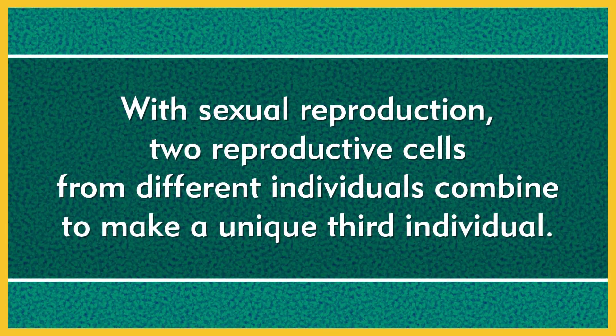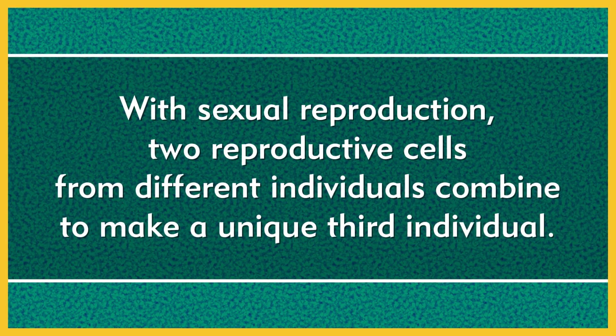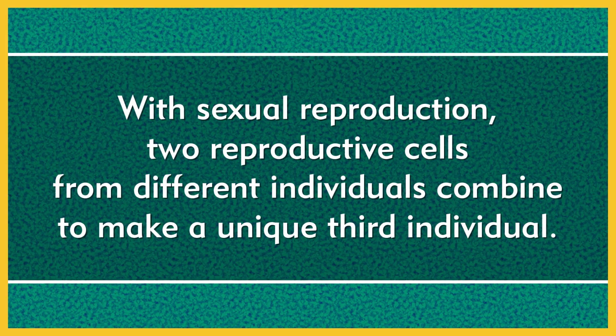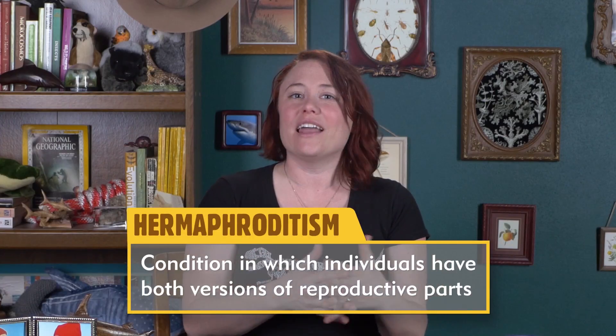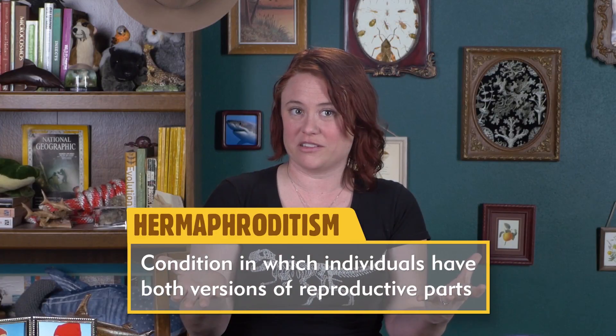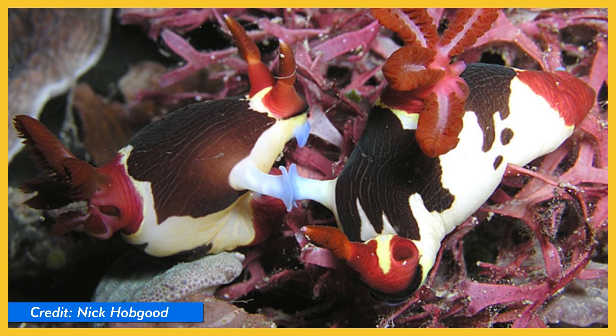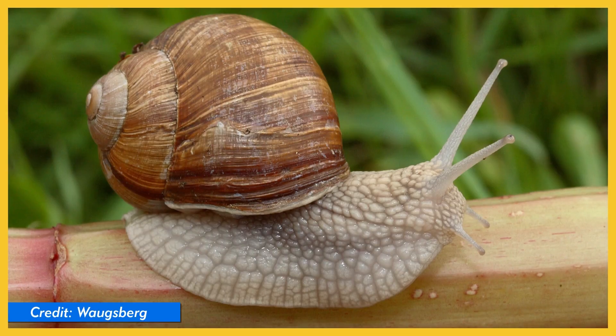This leaves us with sexual reproduction, which, I gotta be honest, is kind of boring once you've gone on a fission and parthenogenesis trip. With sexual reproduction, two reproductive cells from different individuals combine to make a unique third individual. But wait, there's more. There's actually a version of sexual reproduction that includes only one individual. This version is called hermaphroditism, and it happens when individuals have both versions of reproductive parts. That means they can have sex with other individuals or can self-fertilize. Basically, in situations where they can't move much and find a mate, these individuals can have sex with themselves. Way to go, snails.